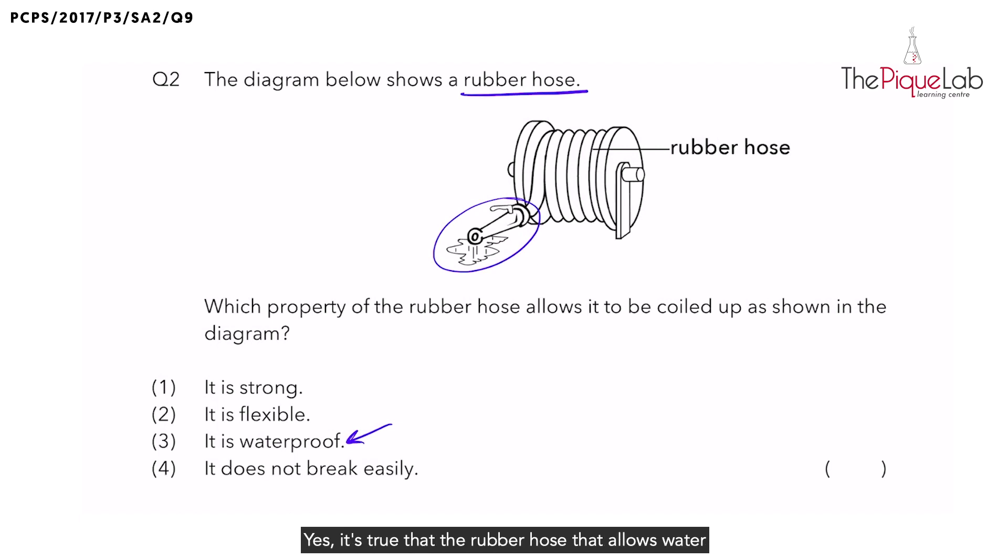Yes, it's true that the rubber hose that allows water to be sprayed out has to be waterproof. Otherwise, the rubber hose would absorb all the water and no water would come out of it. However, this answer is wrong. Why wrong? Because students fail to read the question properly.